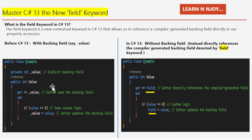Properties allow controlled access to class data, and this property has a getter and setter. The getter retrieves the current value of underscore value when the property is accessed — get returns underscore value. The setter allows assigning a new value to the property. It includes custom logic that checks if the new value is greater than or equal to zero. If this condition is met, underscore value is updated with the new value; if not, the assignment is ignored — effectively preventing negative values from being set.